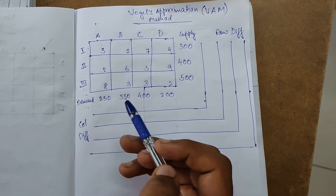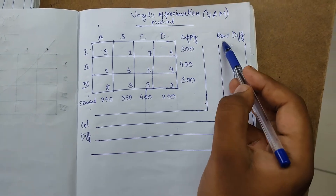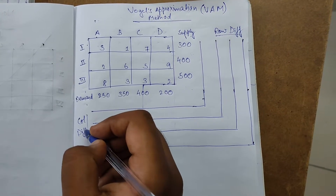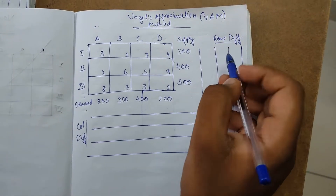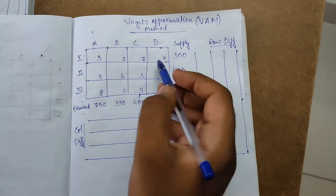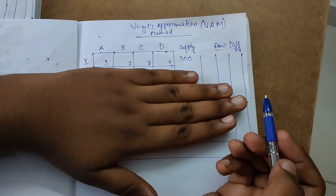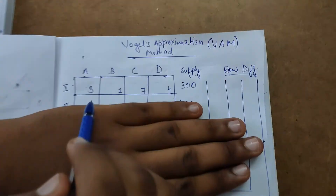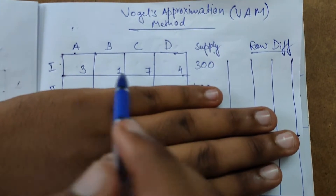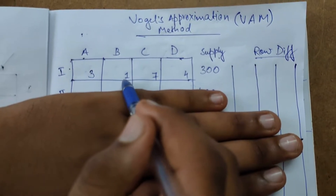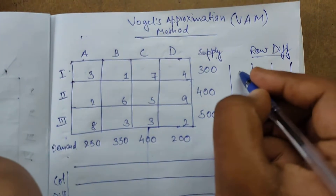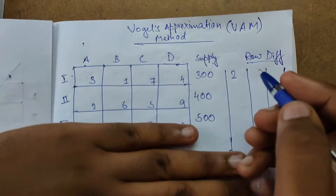We have the row difference and the column difference — it may look a bit complex but it's quite easy. First, we will calculate the row difference. Look at the first row and find the least two elements: one and three. The difference between one and three is two, so write two here.